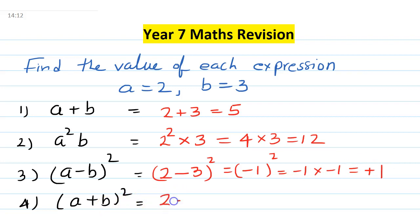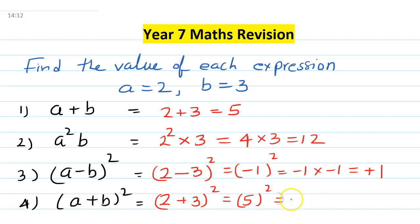Now (a plus b) whole square: a is 2 and b is 3, so (2 plus 3) whole square. 2 plus 3 is 5, then 5 squared means 5 times 5, that is 25. Nice and easy! Now I'm going to give you some practice questions.